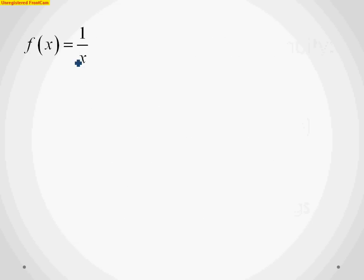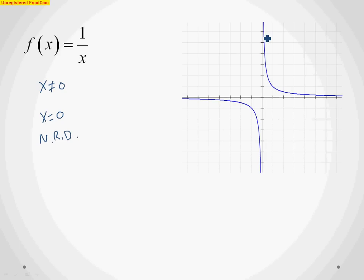Our first example is f(x) = 1/x. We know from previous classes that x cannot equal zero in the denominator. We can't do any factoring or cancellation, so at x equals zero, that is a non-removable discontinuity (NRD). Looking at the graph, we can see an asymptote right at x equals zero. Since nothing cancels algebraically, x equals zero gives us a non-removable discontinuity, which shows up as an asymptote on the graph.